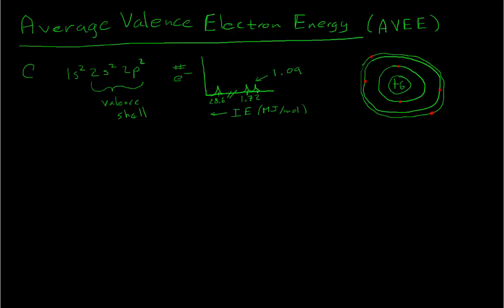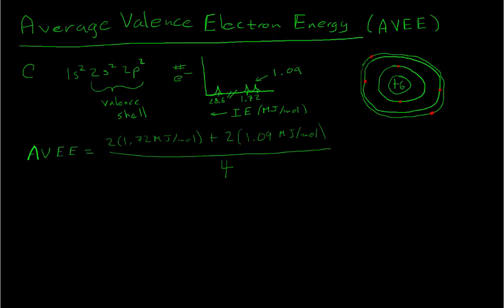We want to calculate the average ionization energy of the electrons in the valence shell — that's what we call AVEE. We've got two electrons in the 2s shell, so we take 2 multiplied by the ionization energy to remove those electrons: 1.72 megajoules per mole. Then we add the ionization energy for the 2p electrons: 2 electrons at 1.09 megajoules per mole. To calculate the average, we add up all the energies for each 2s and 2p electron, then divide by the total number of electrons — four total in the n=2 valence shell for carbon — giving us an AVEE of 1.41 megajoules per mole.